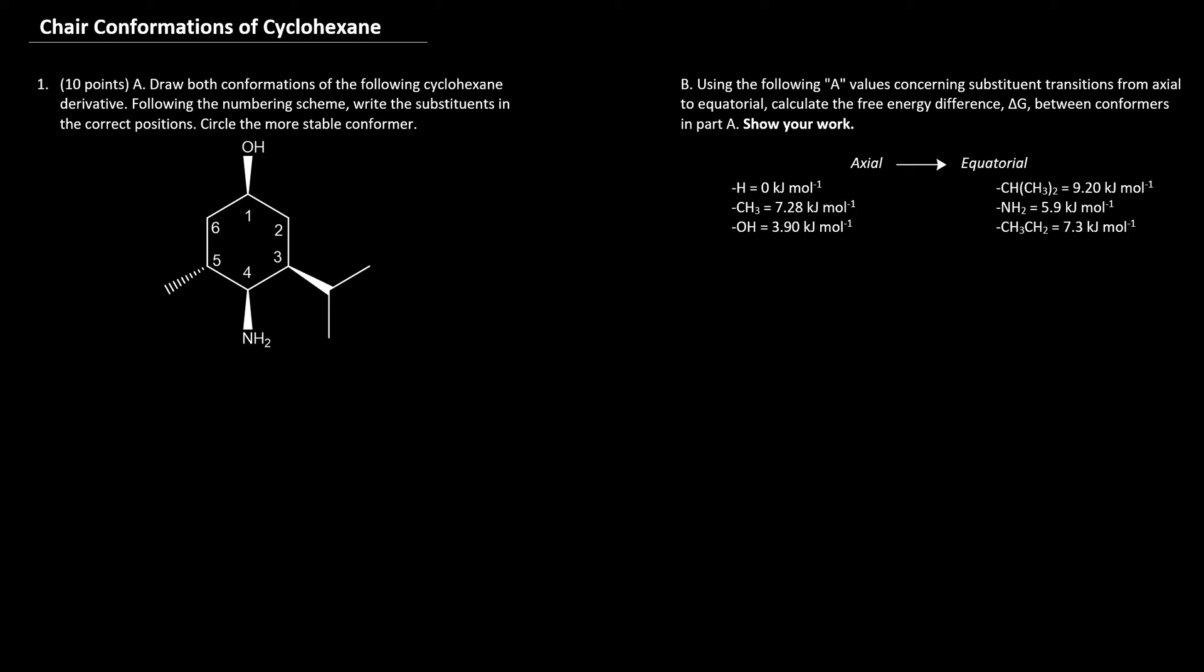This exam review question concerns chair conformations of cyclohexane. On the left side, draw both conformations of the following cyclohexane derivative given below and follow the numbering scheme that was provided and circle the more stable conformer that we draw. On the right side, using the A values concerning substituent transitions from axial to equatorial, calculate the free energy difference delta G between the conformers drawn in part A. We have to show all our work here.